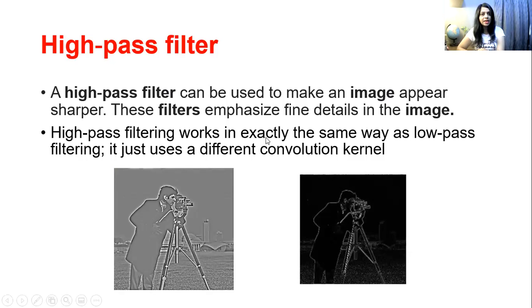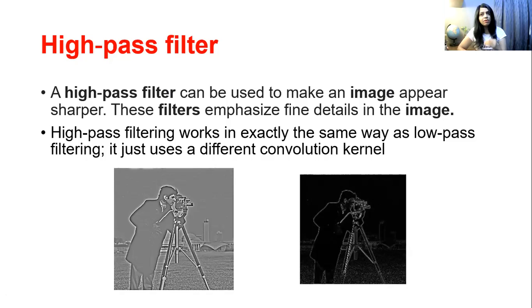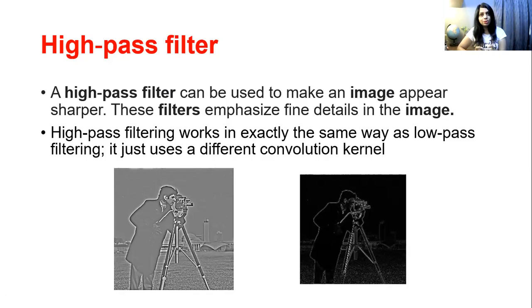High pass filtering works in exactly the same way as low pass filtering. In low pass filtering, we convolve a mask over the image — high pass filtering works in the same manner. The difference is just that its convolution kernel is different, meaning the mask used will be different.